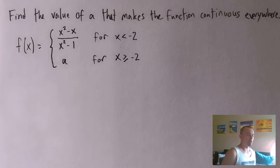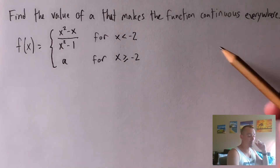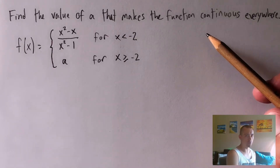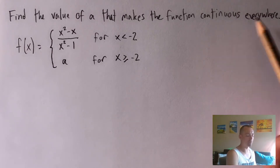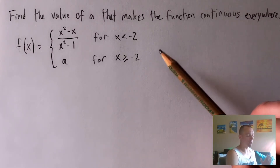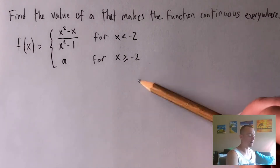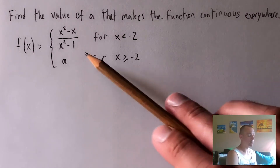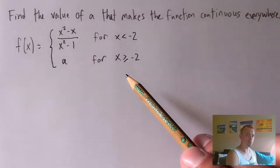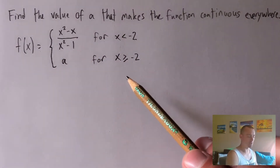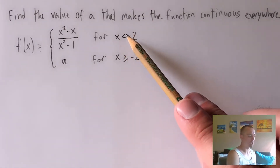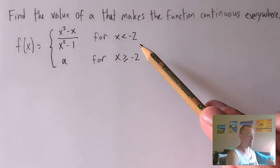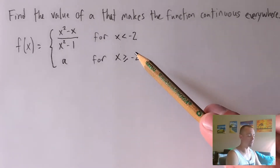Before you do a problem like this, you always want to keep in mind what would be required for a piecewise function in general to be continuous everywhere. In order for this function to be continuous everywhere, we need to make sure that each piece individually is continuous on its entire domain where it's defined, and then we need to make sure that it's continuous when we switch from one function to the other.